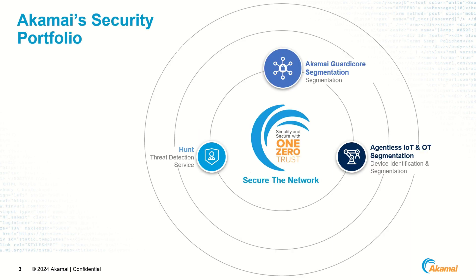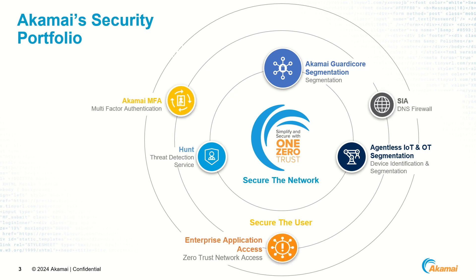Starting at the core of Akamai's security portfolio, we first secure the network using Akamai GuardiCore segmentation to control workload east-west traffic. Agentless IoT and OT segmentation secures workloads and devices where agents cannot be deployed. Akamai Hunt serves as an overlay to secure the entire network.